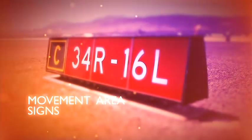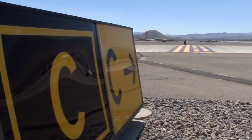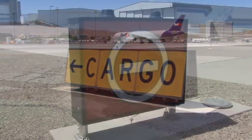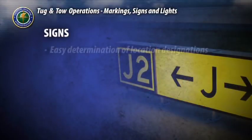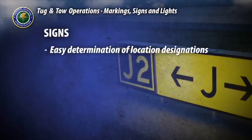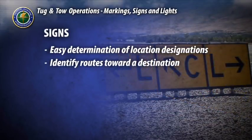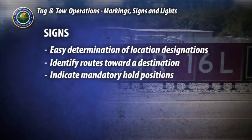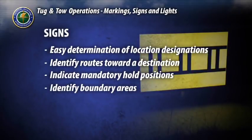All airports should have a standardized guidance sign system designed for the safe and efficient movement of aircraft and ground vehicles. The purpose of the sign system is to provide easy determination of designations or names of any pavement area on which aircraft may be located, easy identification of routes to be navigated toward a desired or instructed destination, indication of mandatory holding positions including those used to maintain aircraft separation during low visibility weather operations, and identification of boundaries for approach areas and ILS critical areas.